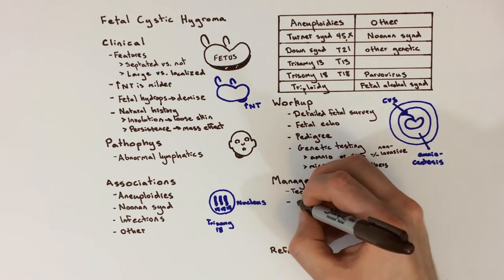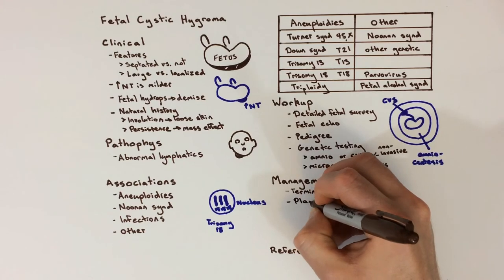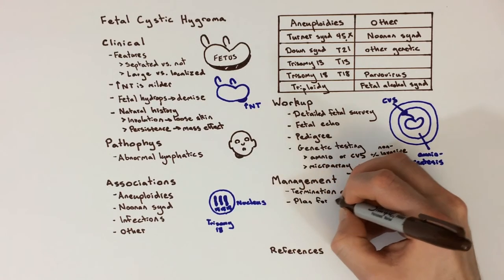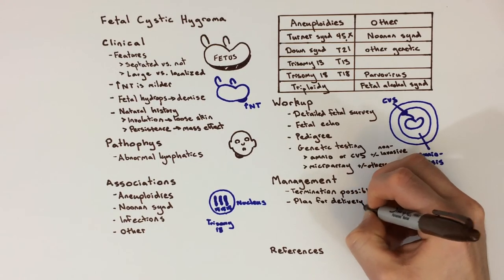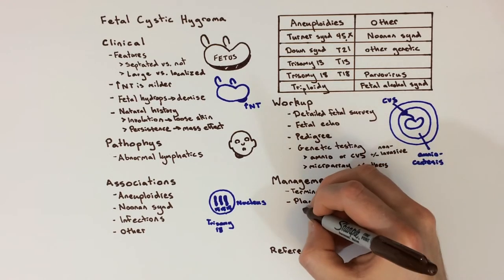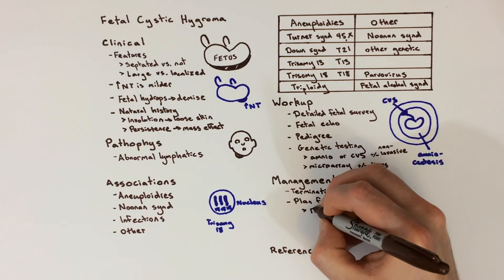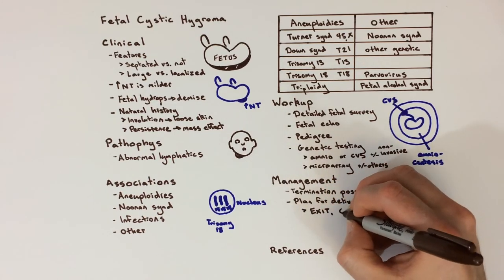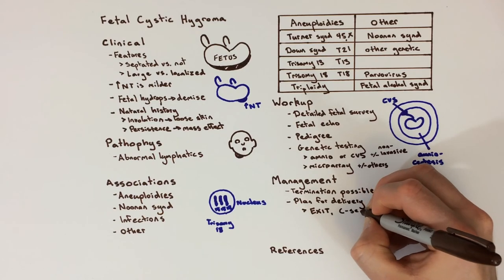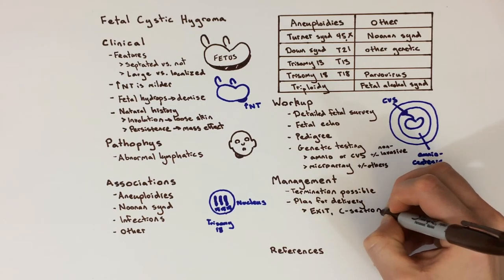For pregnancies continued to term, the most important planning for delivery is assessing whether a cystic hygroma of the neck, if present, is likely to compromise the airway. If so, the EXIT procedure, which stands for ex utero intrapartum treatment, is done, where an endotracheal tube is placed during a c-section before the fetus is separated from the placental blood supply.